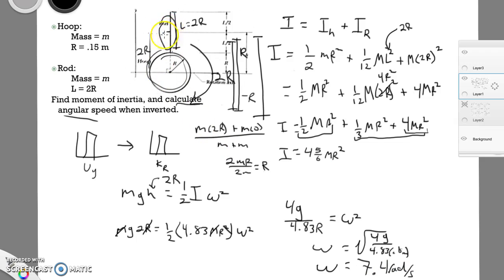So we converted our gravitational potential energy into rotational kinetic energy, and we end up with 7.4 radians per second. And this is a pretty high-level problem, and this is about as advanced as we get for now with rotation.